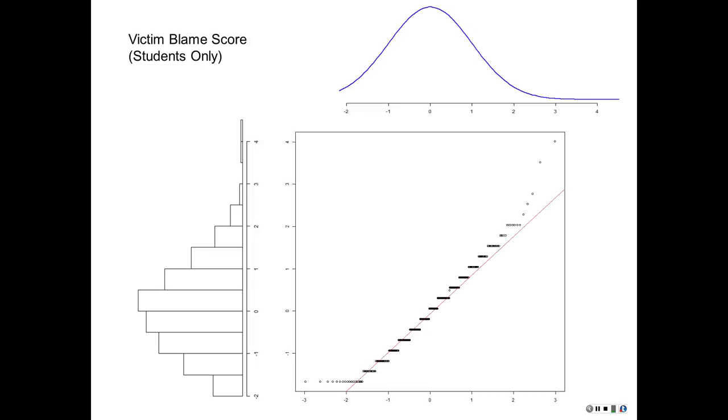Victim blame score for students. Positive skew. We can tell there's what it should look like if it were normal versus what it does. Positive skew. And you can tell it kind of starts on the top and runs along and then goes back up again in kind of a U shape there.